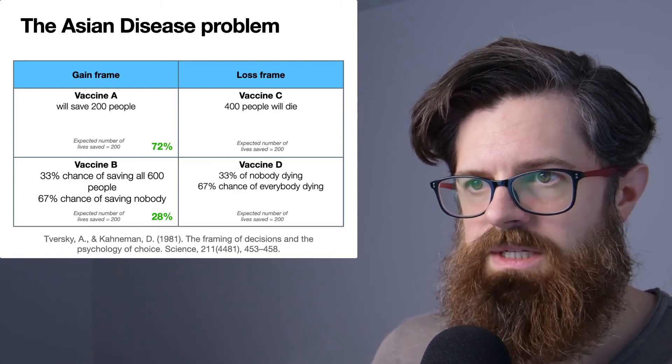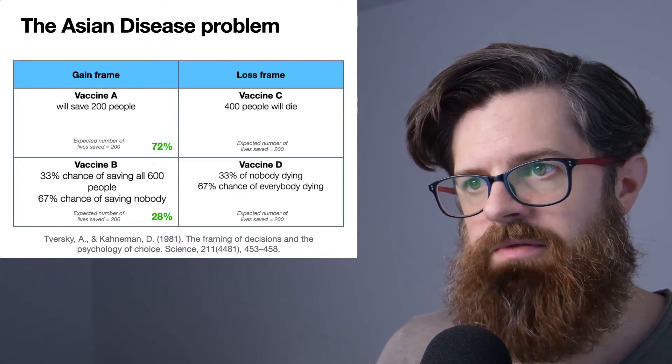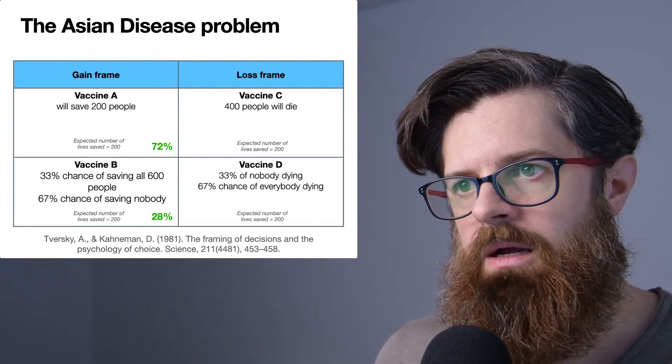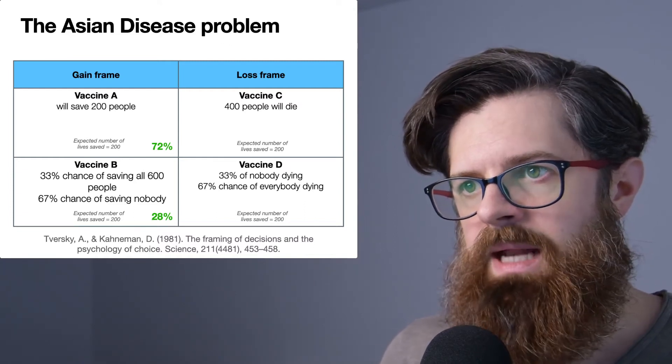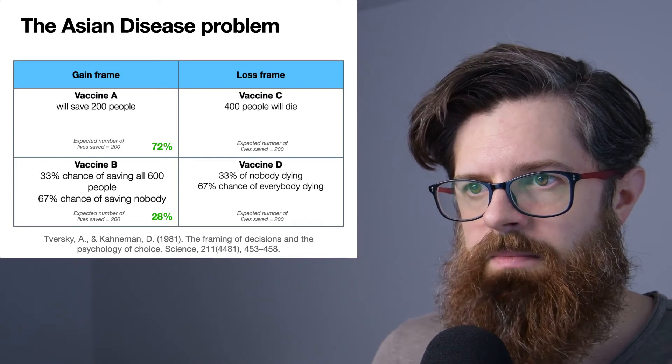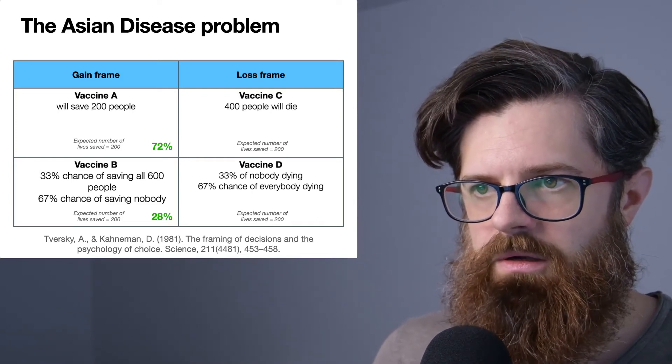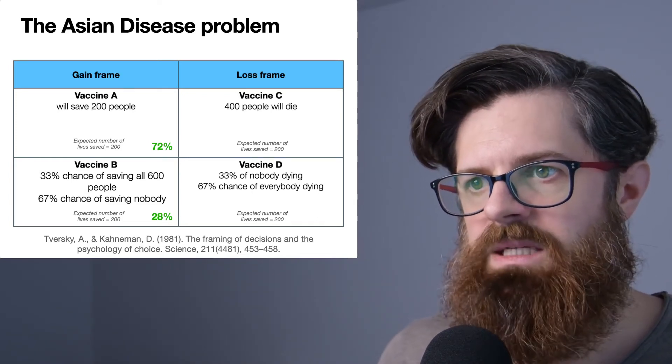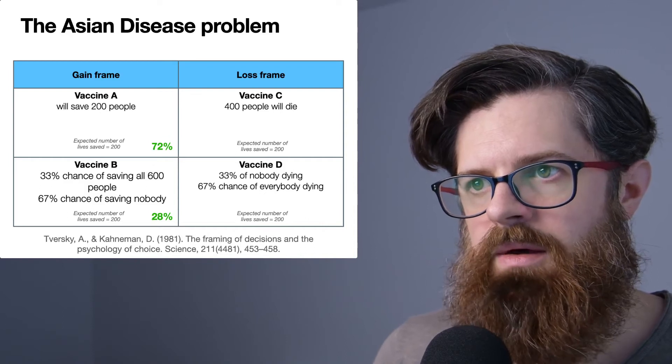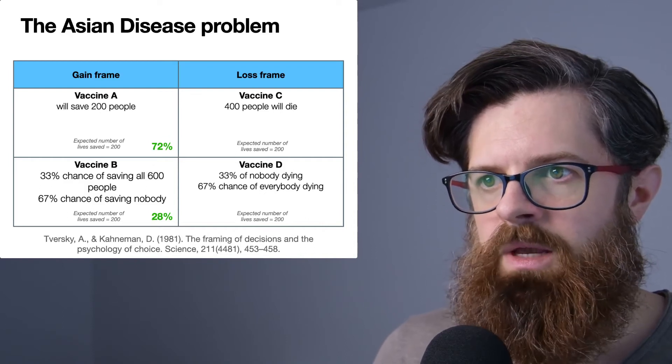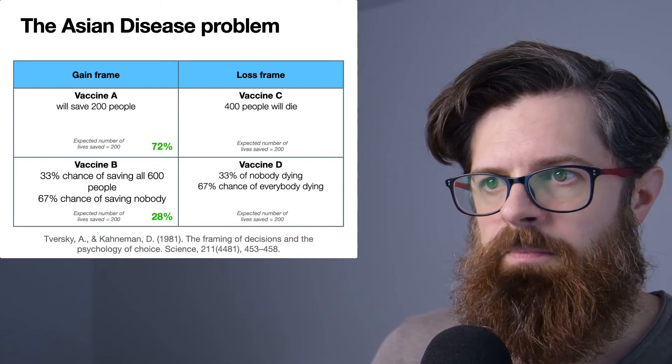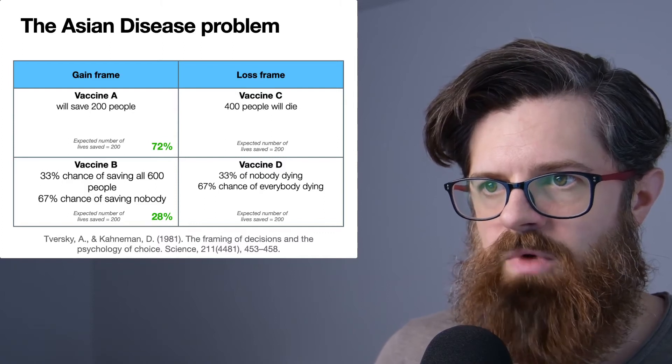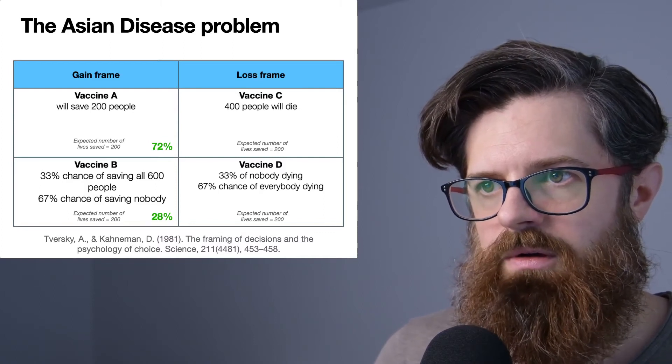If we want to consider risk-seeking or risk-aversive behavior, what we can see is that most people went for Vaccine A, which has no uncertainty, and fewer people went for Vaccine B. We can say that in this gain frame, people are exhibiting some slight risk aversion—they're going for the sure thing of saving 200 people.